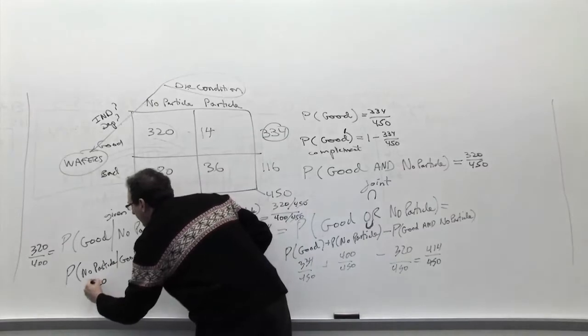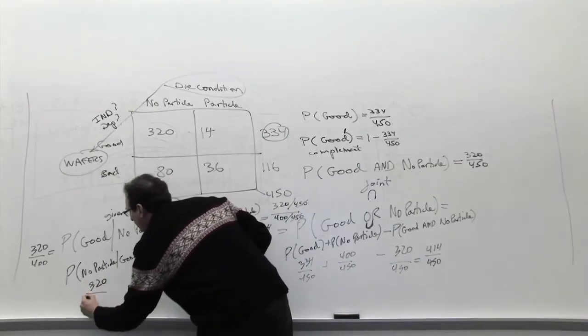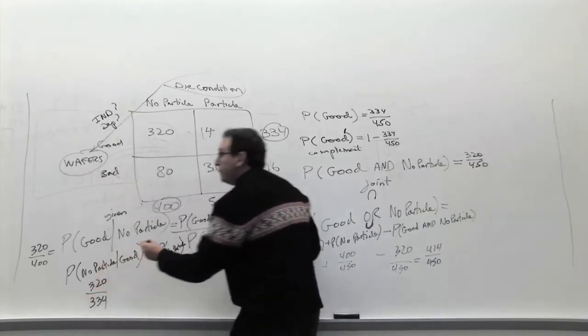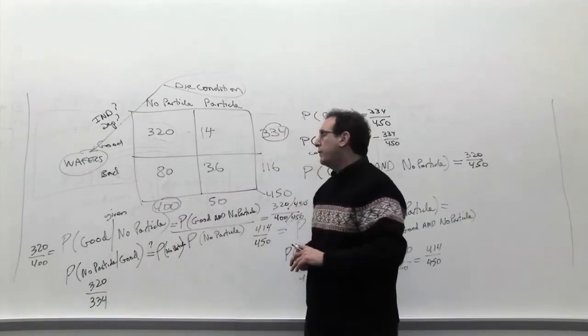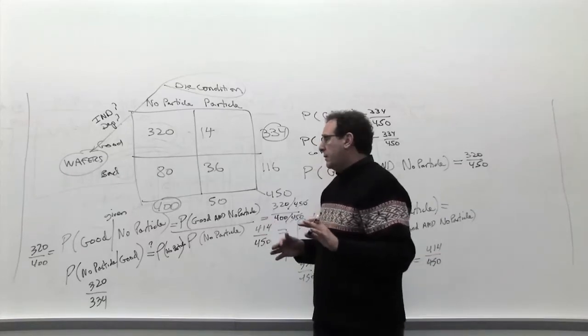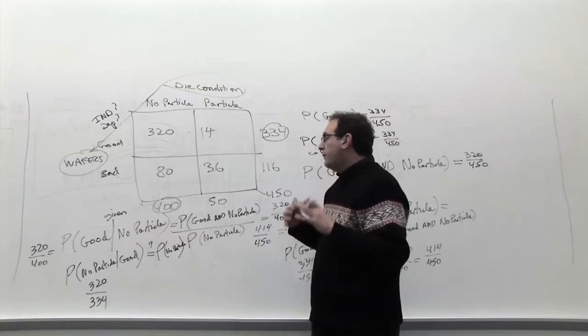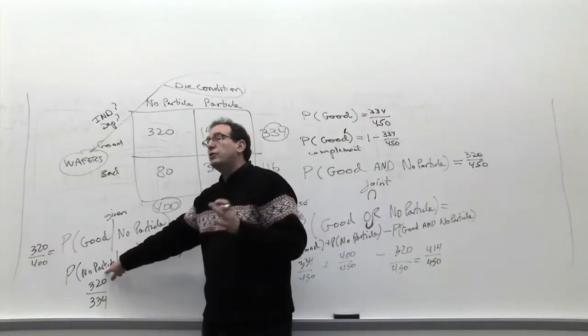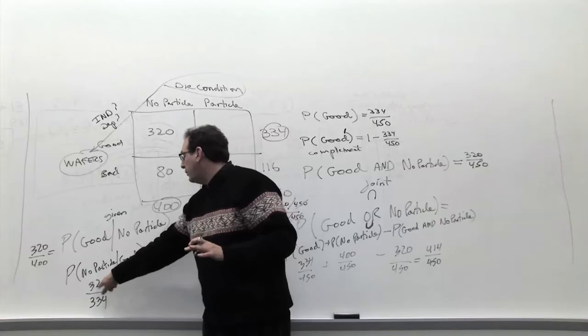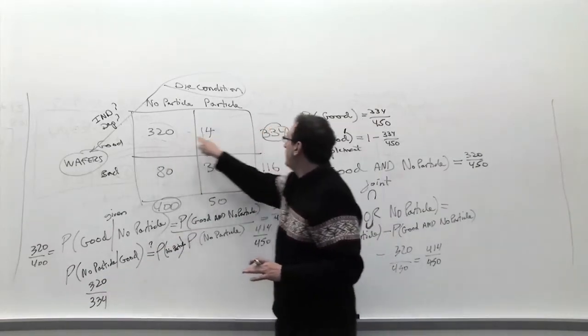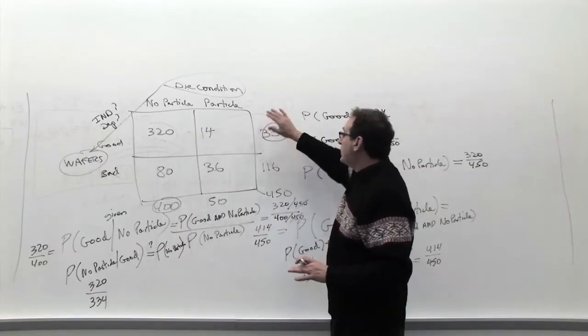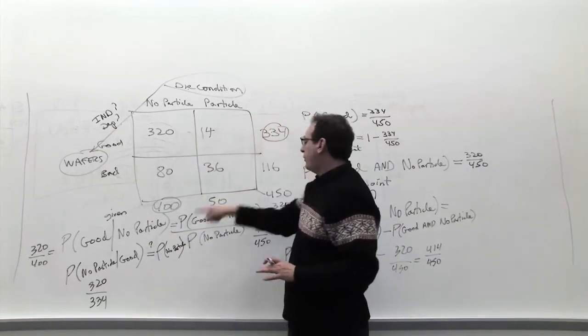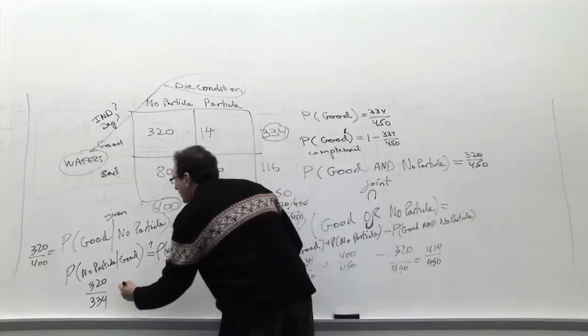So the left side of the equation by a so-called common sense approach. And again, you might want to, maybe we'll do that when the camera shuts off, because I don't want to waste Brian's time. But maybe if you can do it while we're sitting here or do it afterwards. But at some point, I want you to do it by the formula, not just by the common sense. But the common sense answer is 320 out of 334, because we're talking about definitely a good particle. There are 334 of those. How many are also no particle?